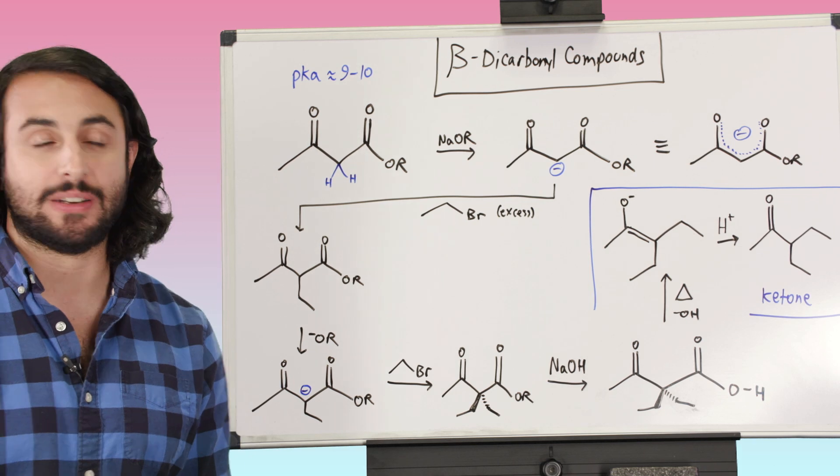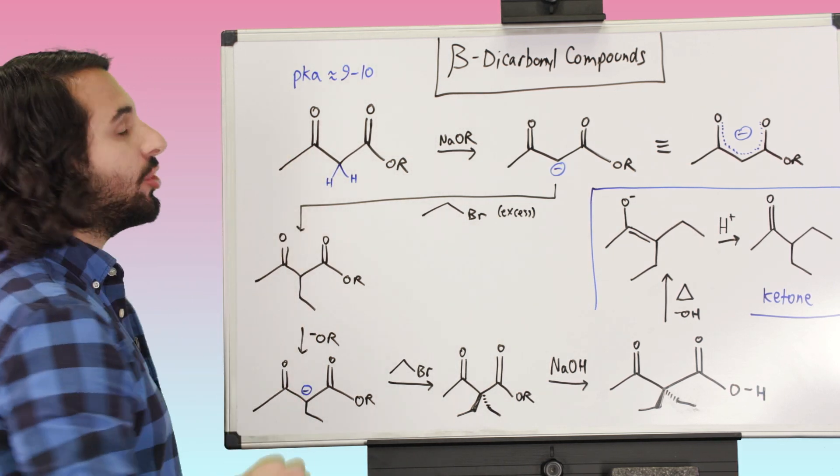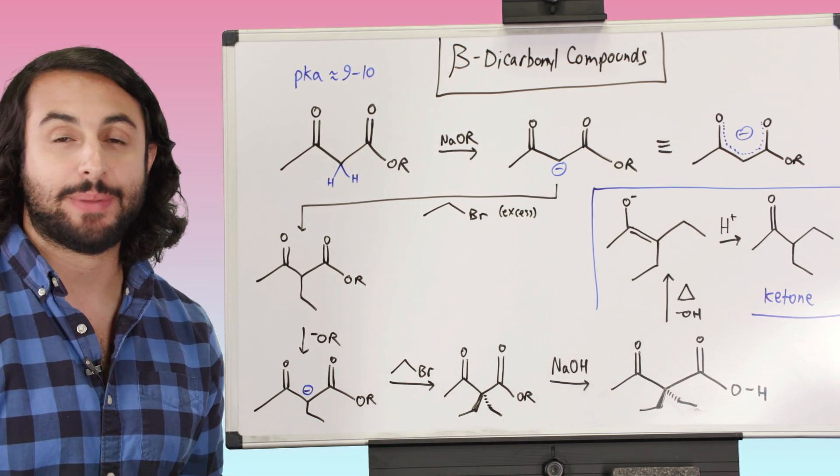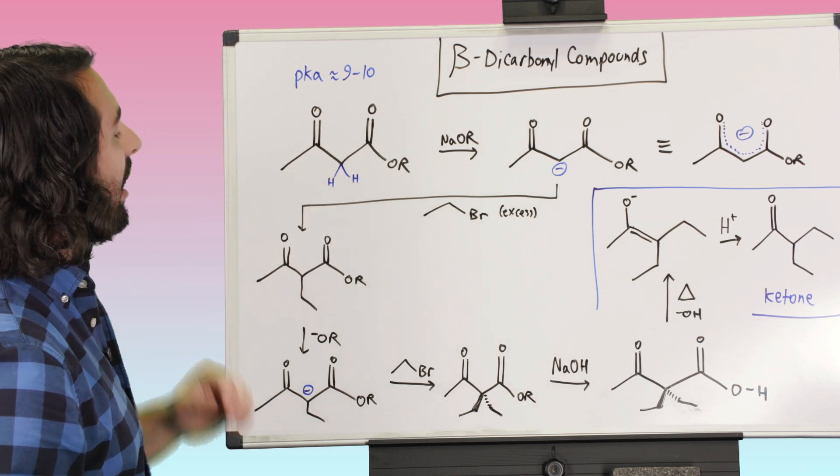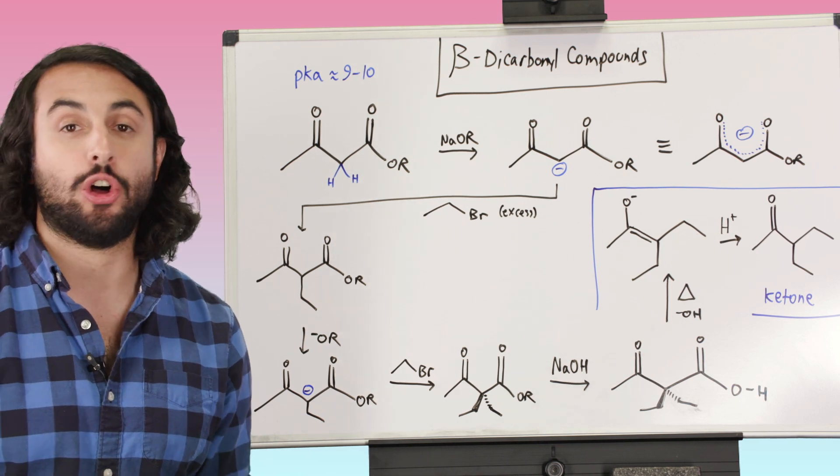So consider this an extension of Claisen. What can we do with this now? One key feature that we did mention before that we want to understand about beta-dicarbonyl compounds is that suddenly because of the proximity of these carbonyls, the acidity of the alpha protons is dramatically altered.